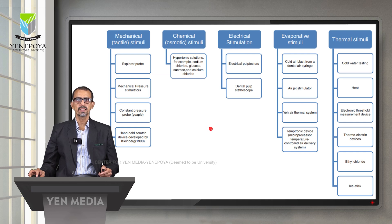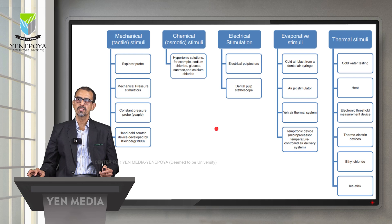Different stimuli can initiate this response. Mechanical or tactile stimuli include passing an explorer or probe on exposed dentine, mechanical pressure stimulators, or a constant pressure probe like an EPL probe or a handheld scratch device. Chemical stimuli include hypertonic solutions such as sodium chloride, glucose, sucrose, and calcium chloride. Electrical stimulation may use electrical pulp testers or a dentine pulp stethoscope. Evaporative stimuli include a cold air blast from a dental air syringe or an air jet stimulator. Thermal stimuli include cold or hot water, thermoelectric devices, ethyl chloride spray, or an ice stick.